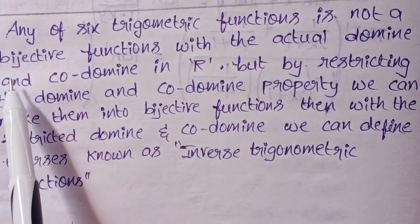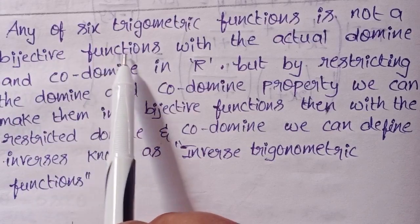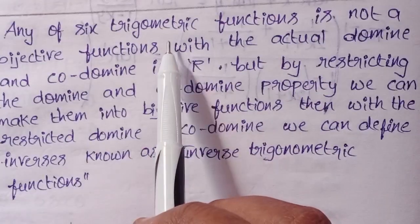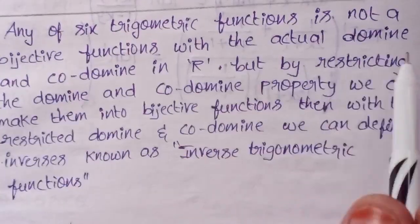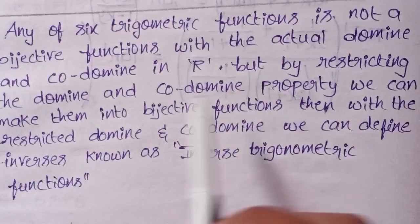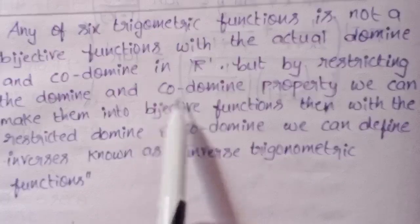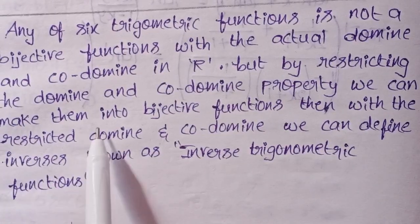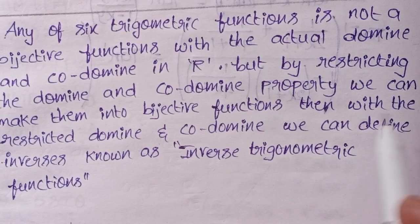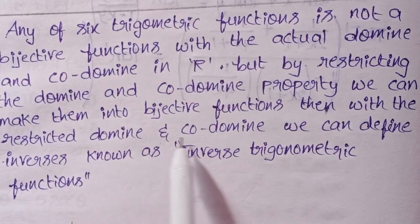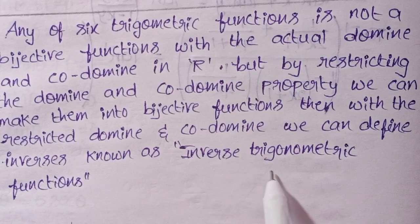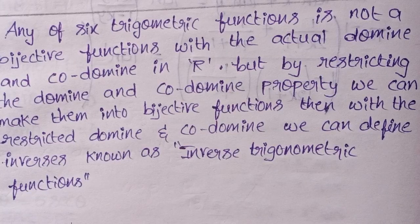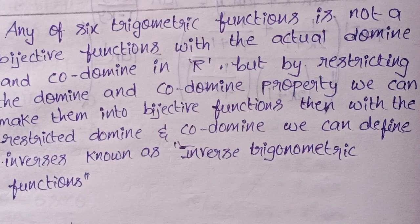Definition: Any of the six trigonometric functions — sine, cosine, tan, cot, cosecant, secant — is not a bijective function with the actual domain and co-domain in R. But by restricting the domain and co-domain, we can make them bijective functions, and then we can define their inverses, known as inverse trigonometric functions.